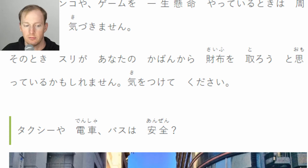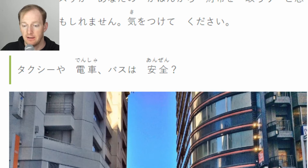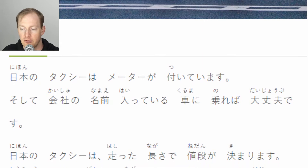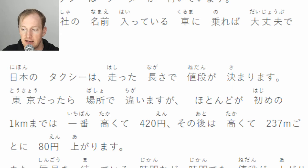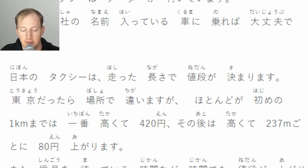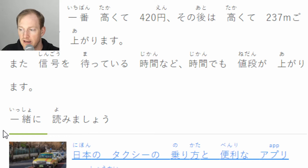タクシーや電車、バスは安全？日本のタクシーはメーターがついています。会社の名前が入っている車に乗れば大丈夫です。日本のタクシーは走った長さで値段が決まります。東京だったら場所で違いますが、ほとんどが初めの1kmまでは最高で420円。その後は237mごとに80円上がります。また、信号を待っている時間など、時間でも値段が上がります。